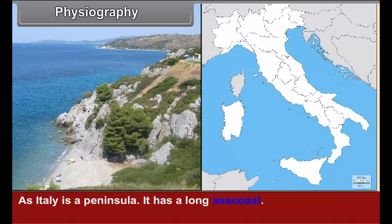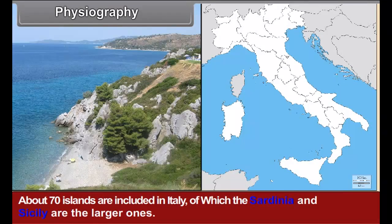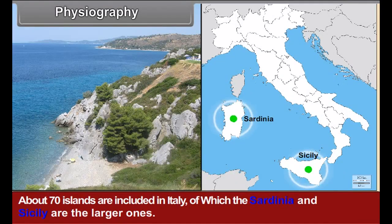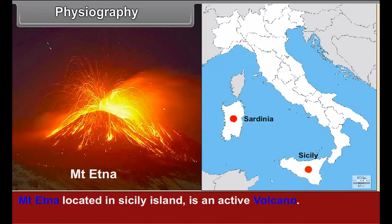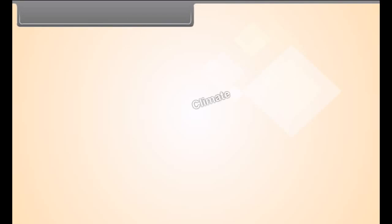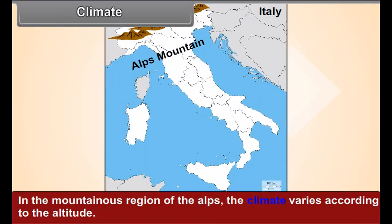As Italy is a peninsula, it has a long sea coast. About 70 islands are included in Italy, of which Sardinia and Sicily are the larger ones. Mount Etna, located in Sicily Island, is an active volcano.